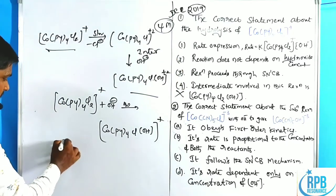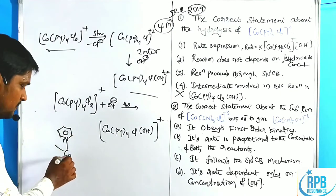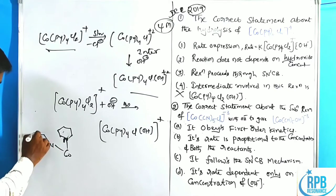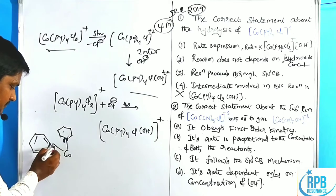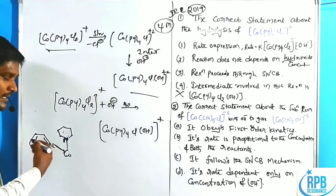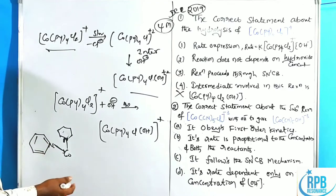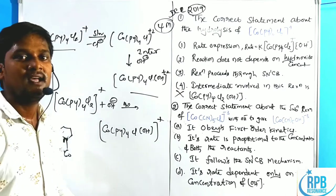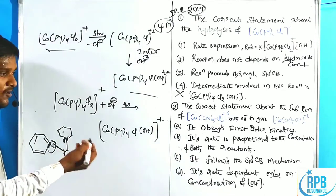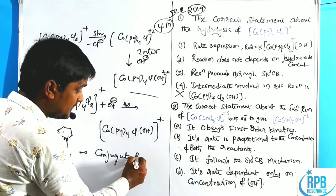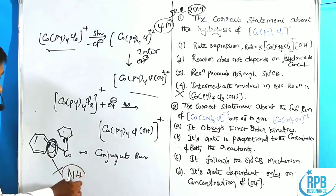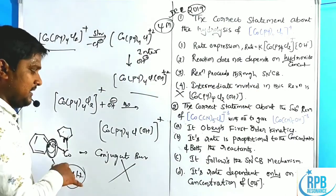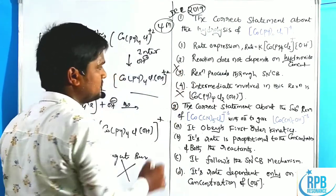Now let us consider the SN1CB mechanism. Pyridine coordinates to cobalt through nitrogen via a dative bond, making the nitrogen tetravalent. There is no NH proton from the nitrogen in pyridine — the nitrogen has a complete valence shell with no labile proton. Generally, cobalt-attached nitrogen protons would be acidic and act as a Bronsted acid. However, since there is no NH proton here, no conjugate base can form. Without conjugate base formation, the SN1CB mechanism cannot proceed.